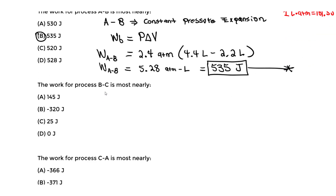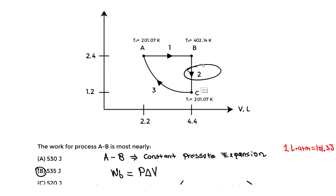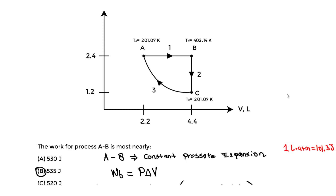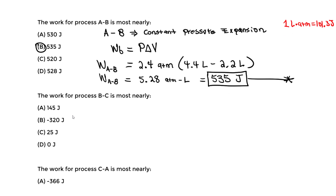For process B to C: the temperature is decreasing so we're cooling, but the volume does not change — we're neither expanding nor compressing. For a closed system at constant volume, the boundary work is always zero. So the work from B to C is zero.